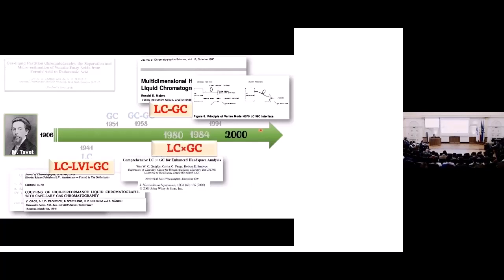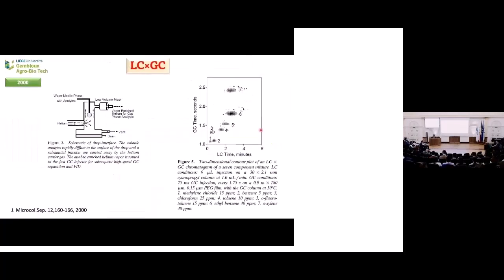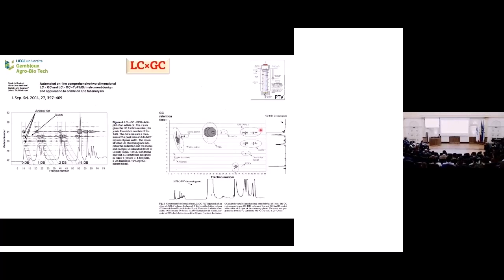There was an attempt to move towards a comprehensive coupling of the technique. The first attempt was published in 2000 using a drop interface, so just a tiny amount of LC eluent was transferred to the GC. In 2004, there was a very nice publication by Hans Blart, here sitting in the audience, that used a PTB to transfer larger amounts of LC eluent into the GC. The PTB gives us the flexibility to transfer whatever we need, like we can split or use splitless mode, avoiding overloading of the GC system.